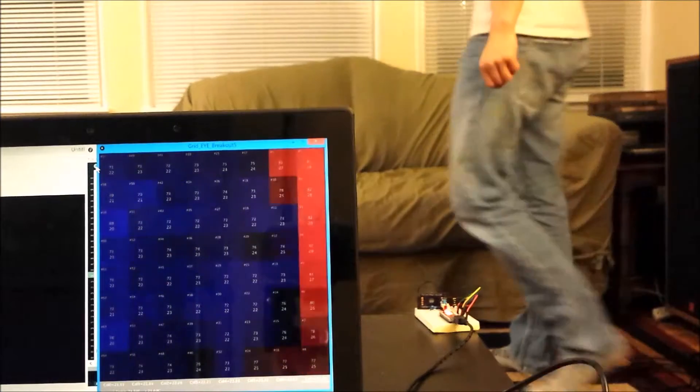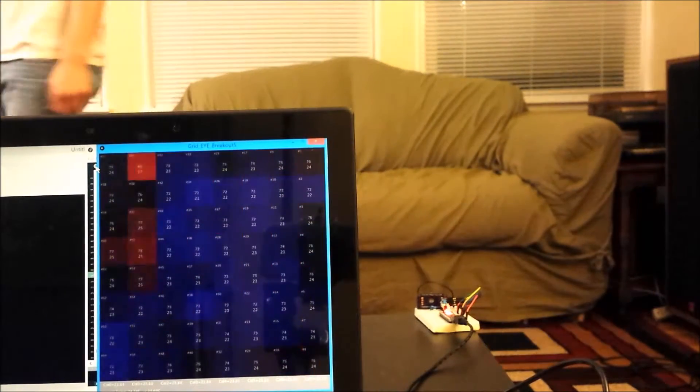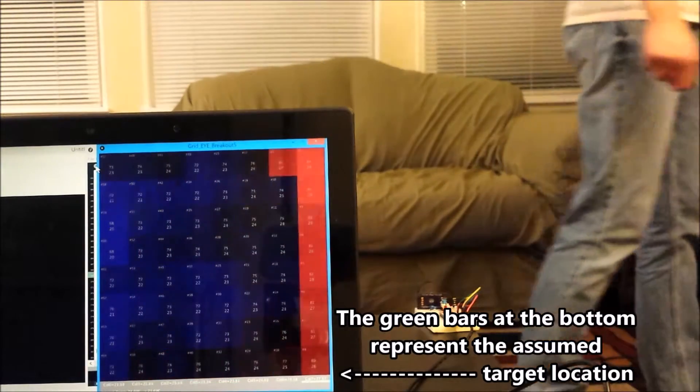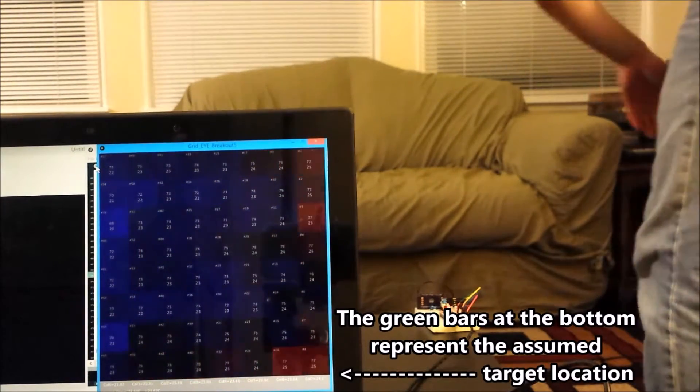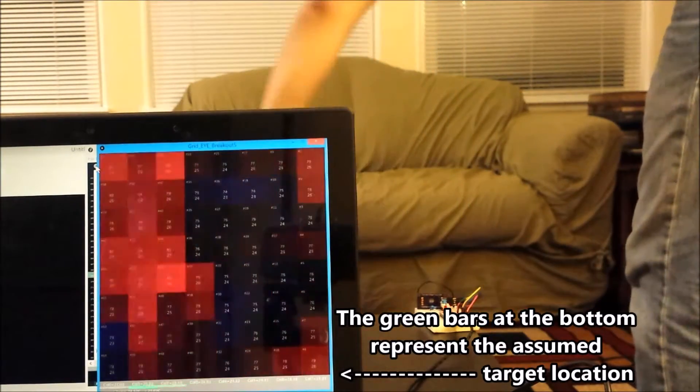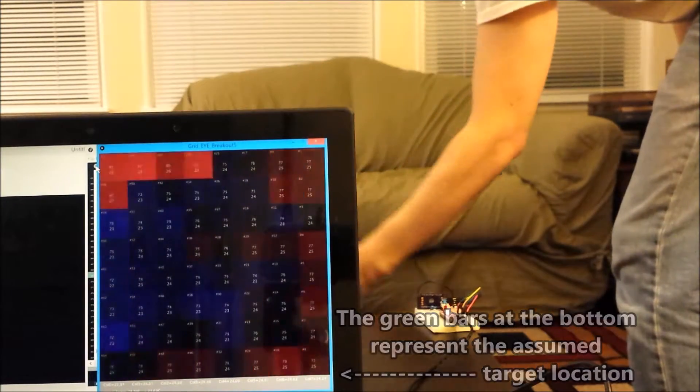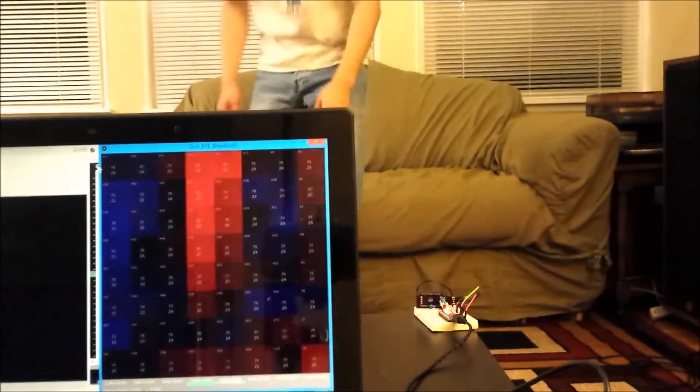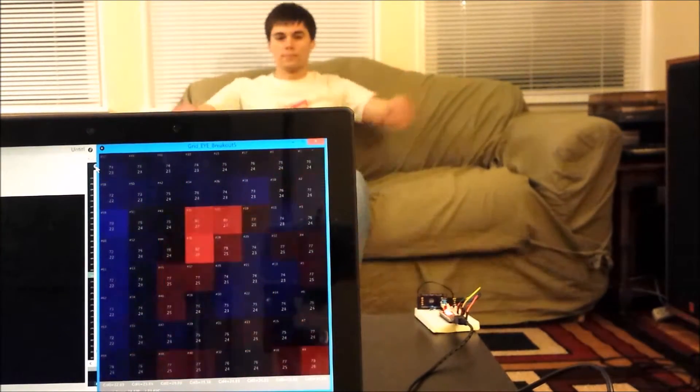Tracking with the Grid Eye is done by column. You can see at the bottom of the screen bars that indicate potential targets, with the green bar indicating the strongest point on the target, which is assumed to be the center. The software used for this visualization is known as Processing, and the IDE is very similar to that of the Arduinos.